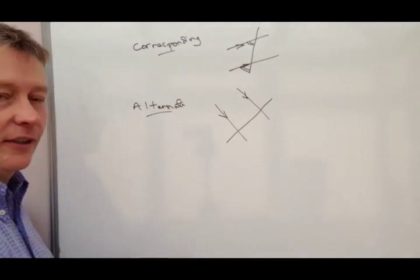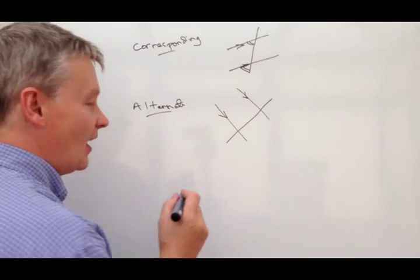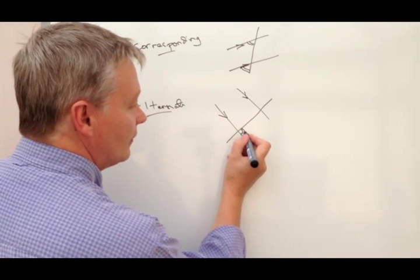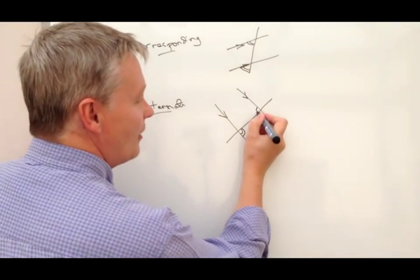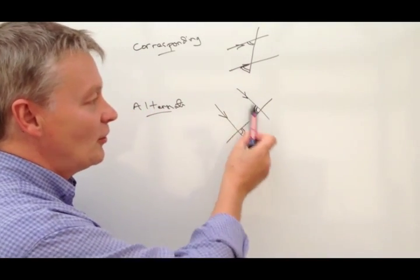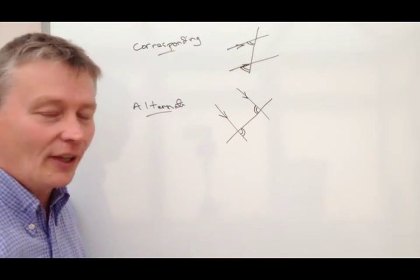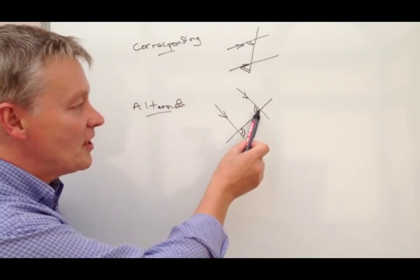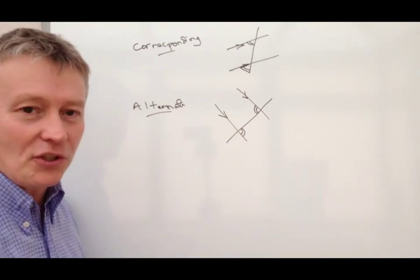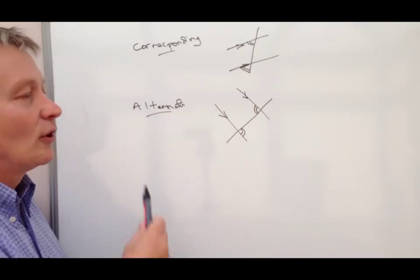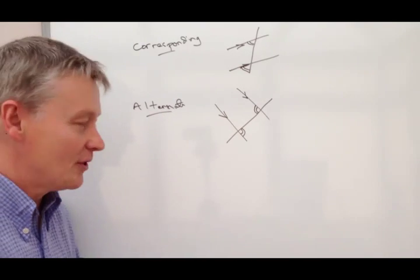And what alternate angles says is that this angle is exactly the same as this angle. I think some teachers call them Z angles or something like that. I've seen that a couple of times. And you can see that it's pretty much the shape of a Z, but it's called alternate angles.